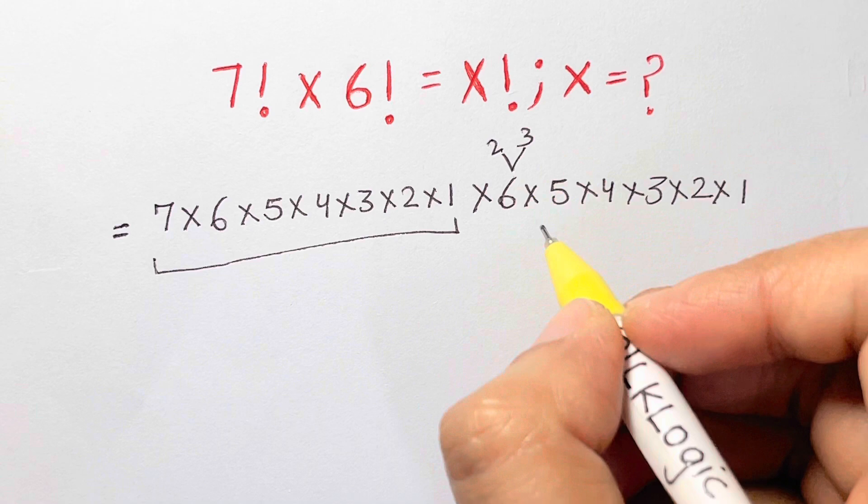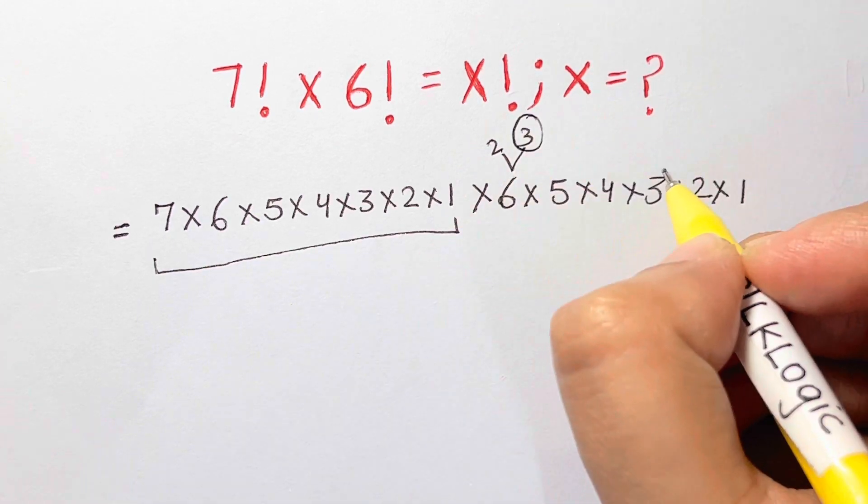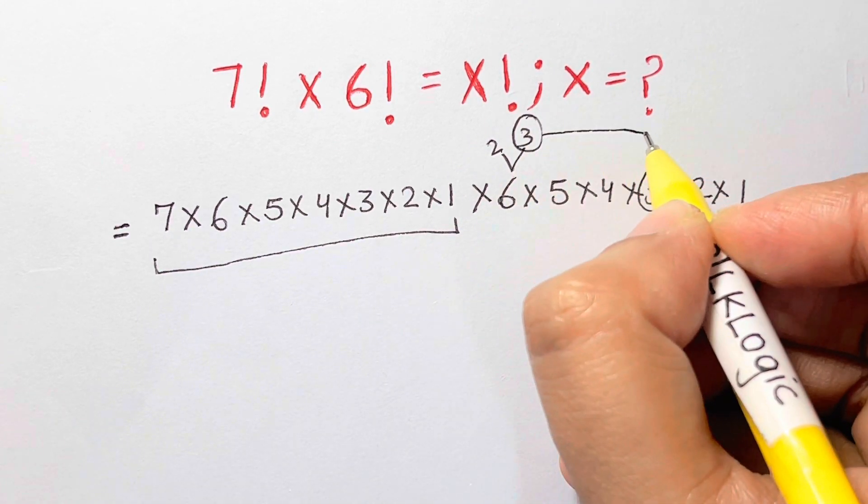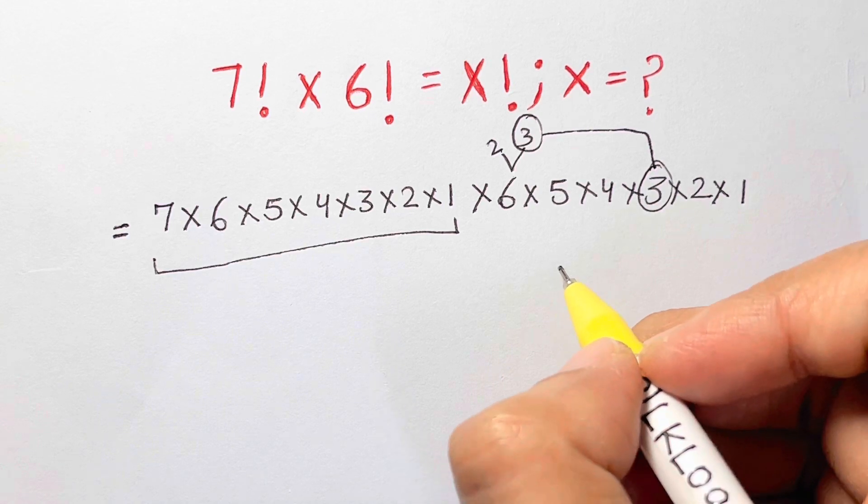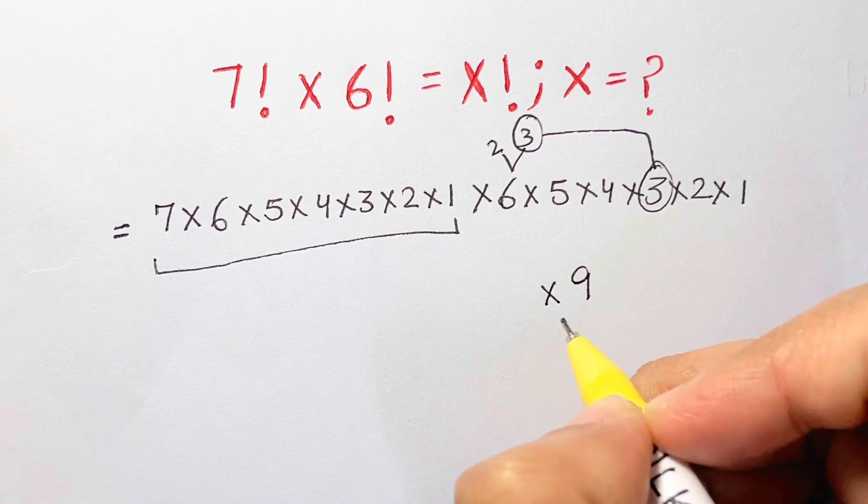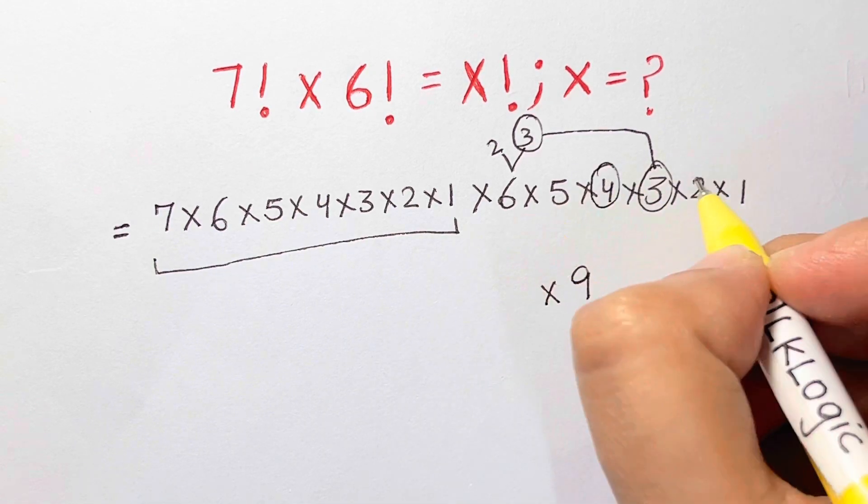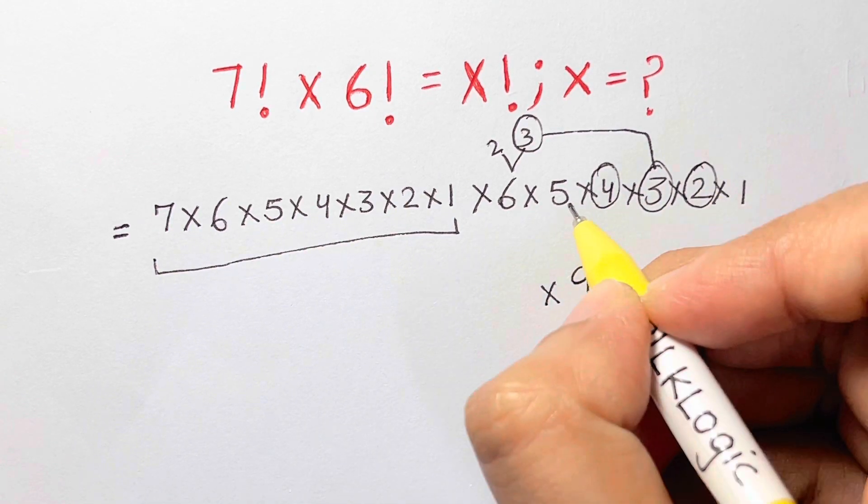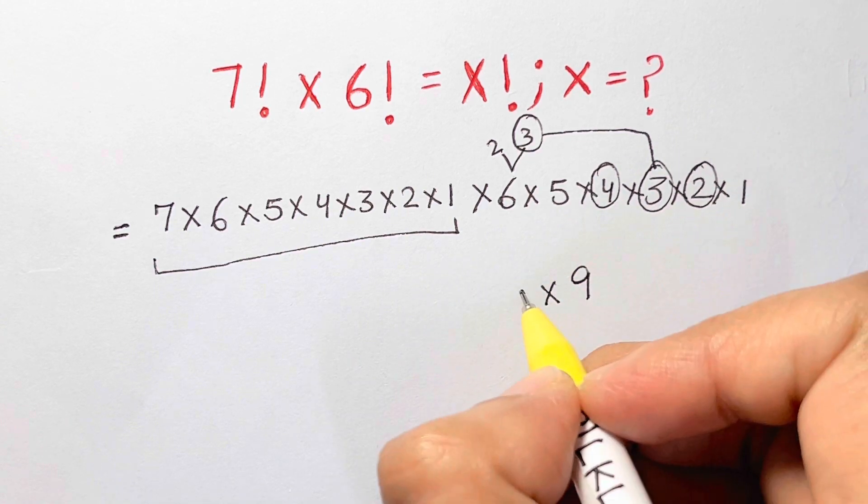Now I can just take this 3 and 3—3 times 3 gives me 9, so I'm going to write that 9. And times, here I have 4 and 2—that's 4 times 2 makes 8, so I have